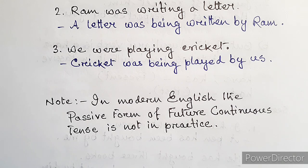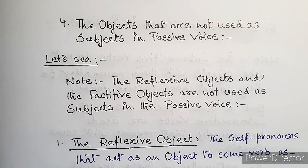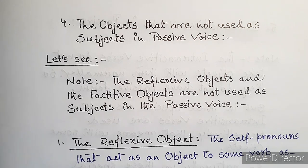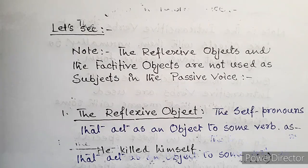So far we have learned the passive form of the present continuous and past continuous tenses. Take note: in modern English, the passive form of the future continuous tense is not in practice.